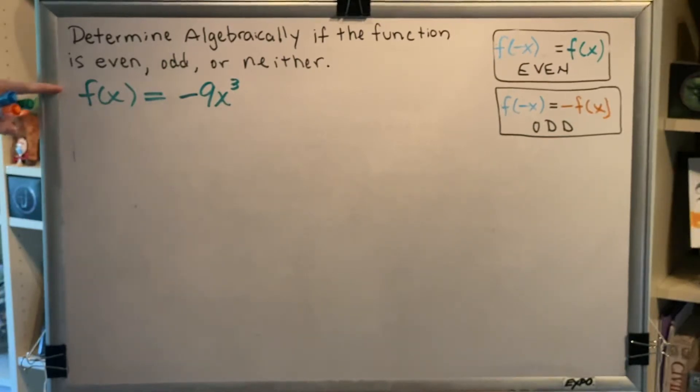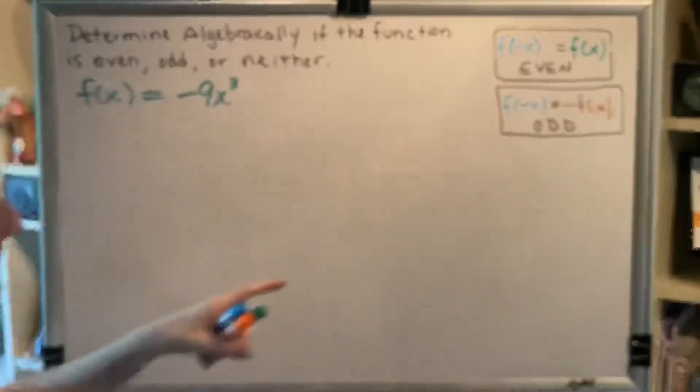The given information, f of x equals negative 9x cubed, has been written in green. F of x will always be given to you.